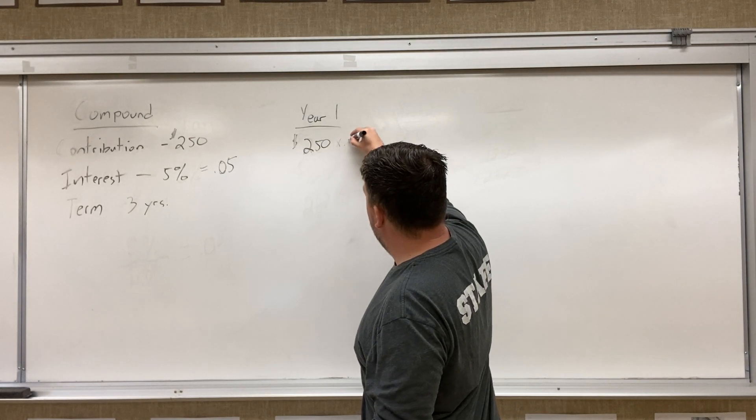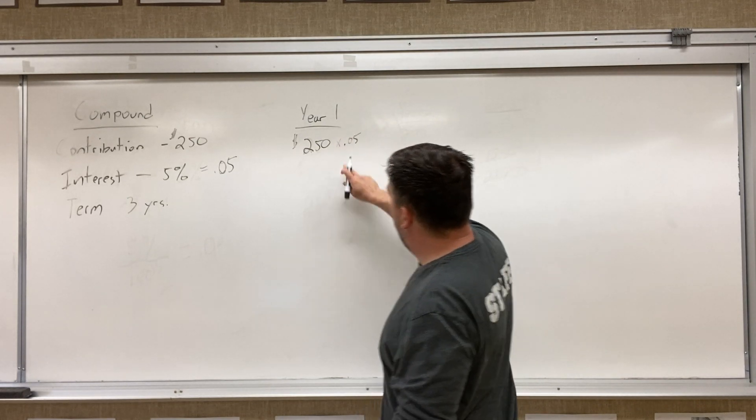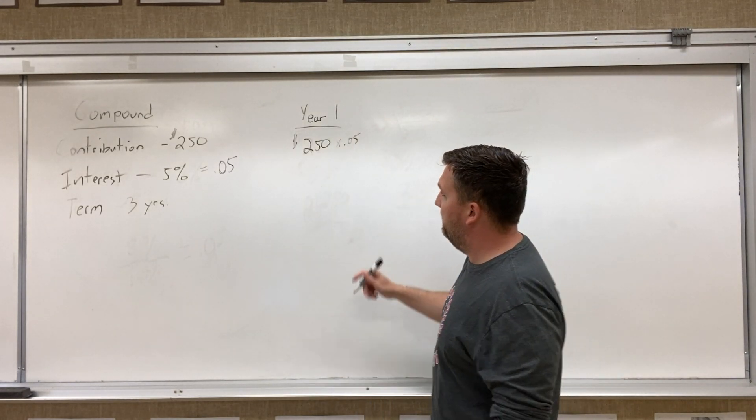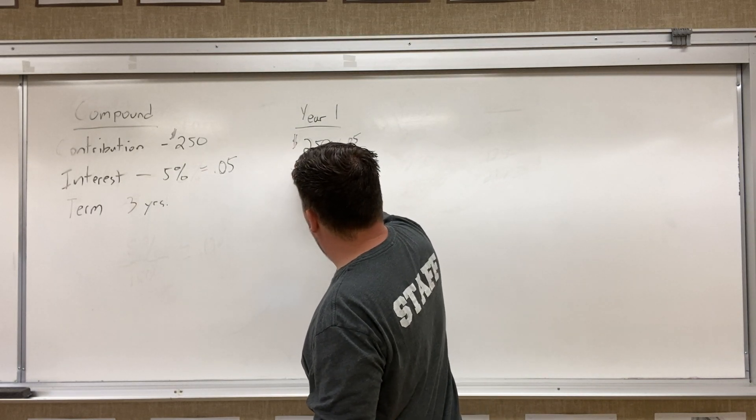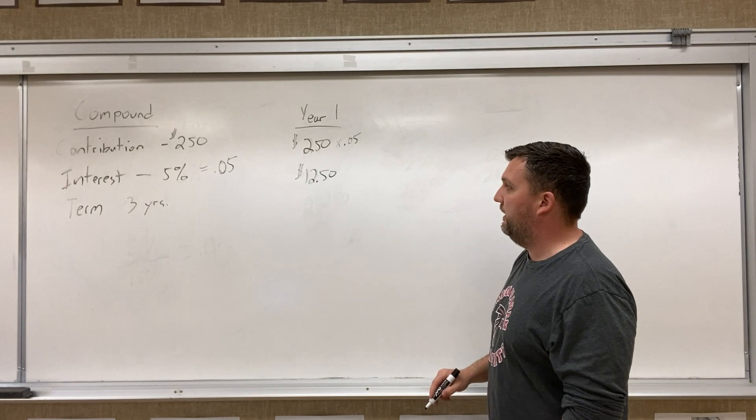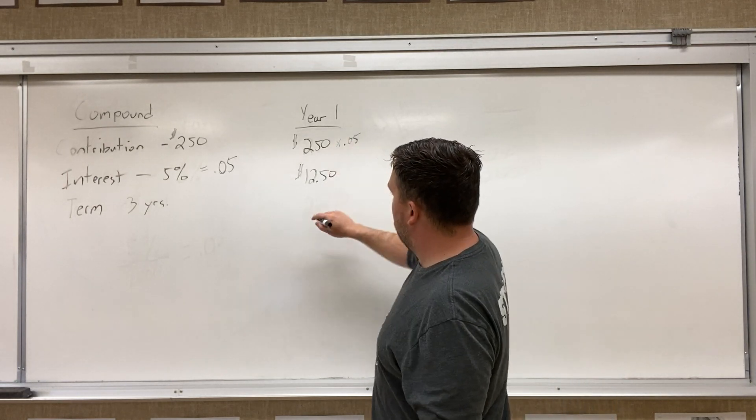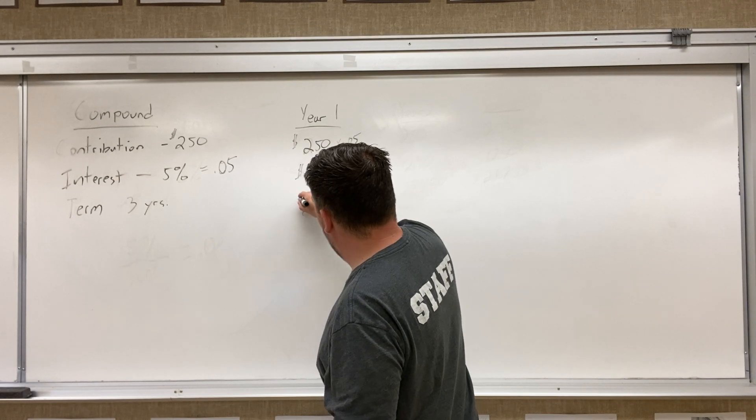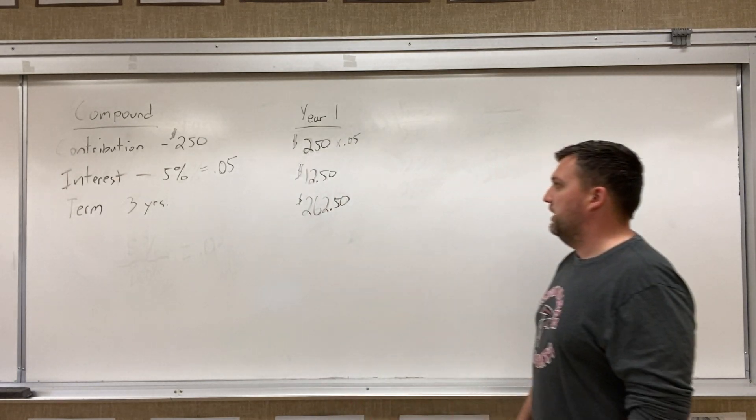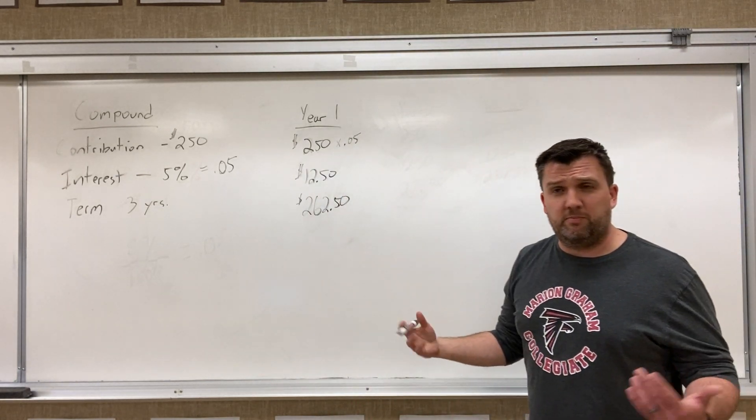And then when we go like we did before, and we times it by 0.05 to find out 5% of this number, we're going to start out, and we're going to have $12.50 in the bank account. When we add those two together, at the end of year one, you're going to have $262.52. Okay, starts out the same as simple interest.